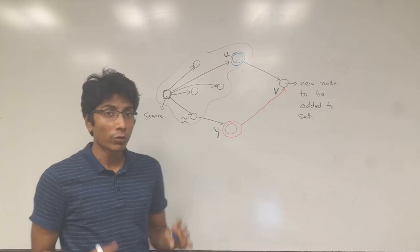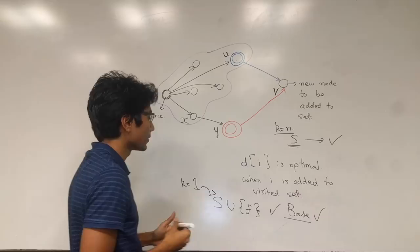Now for the induction step, what we will do is add node v to the set of visited cities, and when we are adding it we are going to make a few claims.